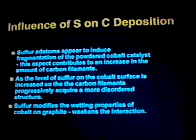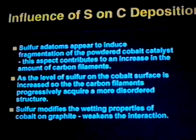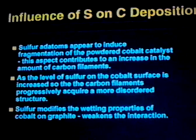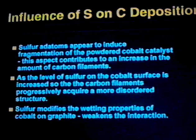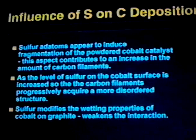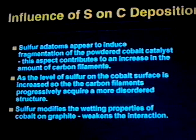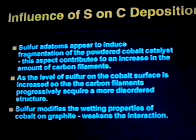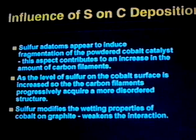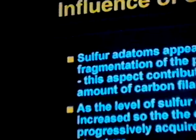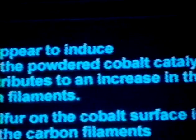These are the conclusions we can make by following the behavior of individual catalyst particles inside the electron microscope and also looking at the character of the deposit after reaction in conventional transmission microscopy. We know that sulfur is inducing some fragmentation, which in itself might contribute to some increase in the amount of carbon produced. As we increase the level of sulfur on the cobalt surface, the filaments become more disordered, less graphitic, and higher surface area — confirming that sulfur is modifying the behavior of the interaction with carbon.